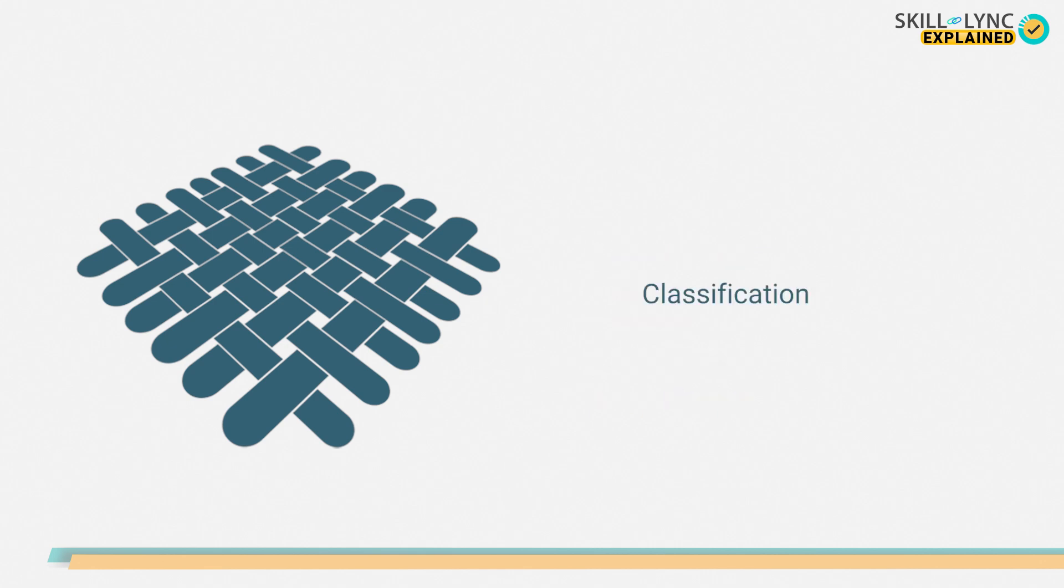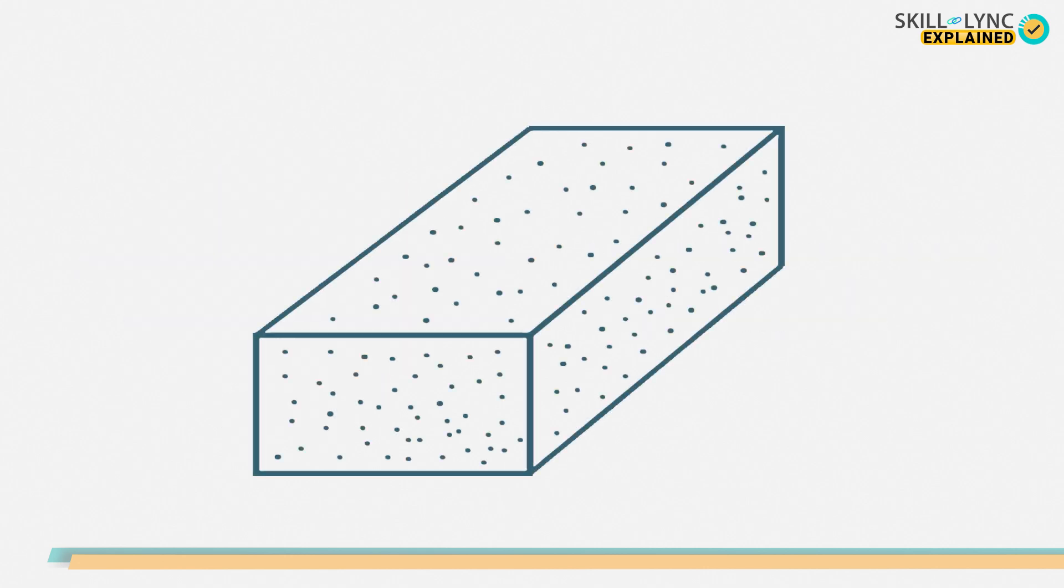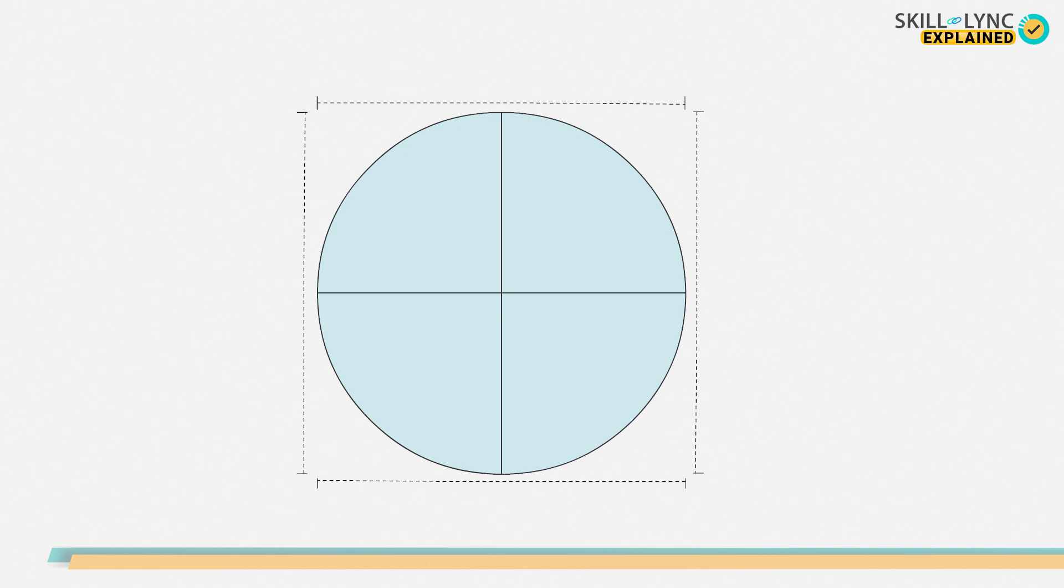When it comes to classification, composites are of three different types: particle reinforced composites, fiber reinforced composites, and structural composites. Let's discuss all these types one by one. Particle reinforced composite is a type of composite that uses tiny particles as its dispersed phase. These particles are characterized by their equal dimensions in all directions.